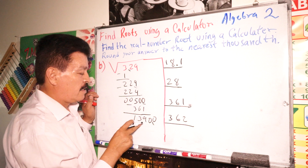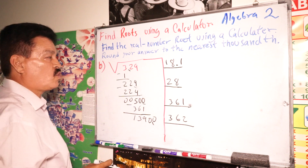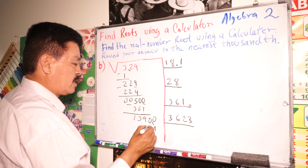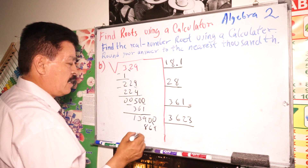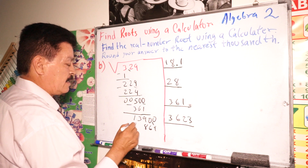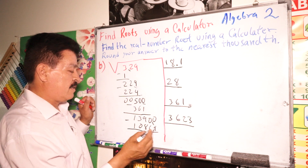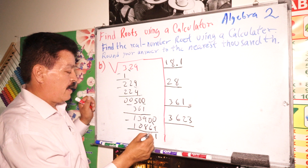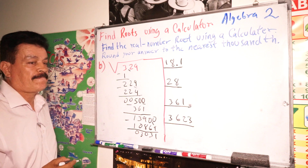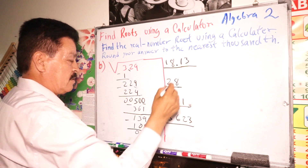Divide 1390 by 362. Let's write 3. Three times 3 is 9, three times 2 is 6, three times 6 is 18, three times 3 is 9 plus 1 is 10. It's 10. Subtract: remainder is 13030. It's smaller than the divisor, so the right digit is 3.